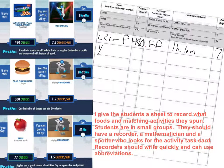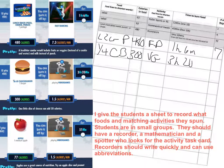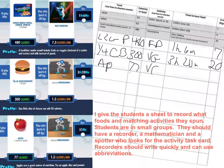Quarter pound cheeseburger, 300 calories, video games, 3 hours 20 minutes — 3 hours equals 18 reps, 20 minutes equals 2, for a total of 20 reps. Apple, 77 calories, video games, 51 minutes — 5 reps.